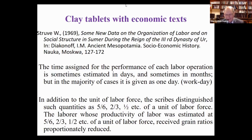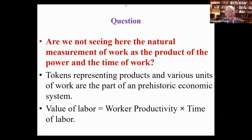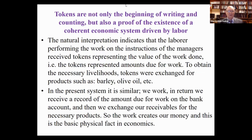The laborer whose productivity was below standard had their grain ration proportionally reduced. This raises the question: are we not seeing here the natural formula for measurement of work as the product of power and the time of work? The value of work equals worker productivity times time of labor, and this is the fair value of compensation. So tokens are not only the beginning of writing and counting, but also proof of the existence of a coherent economic system driven by labor.